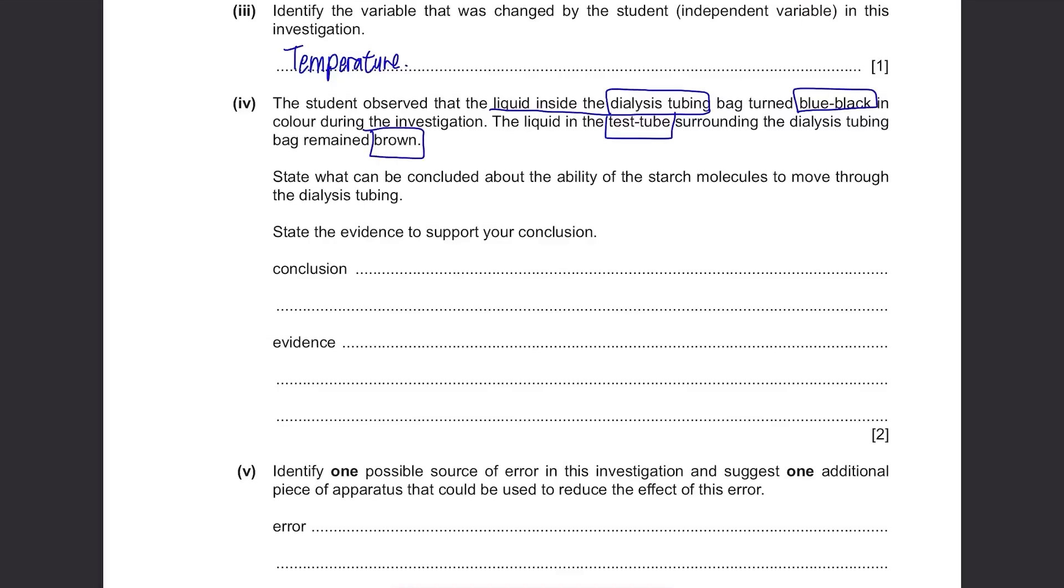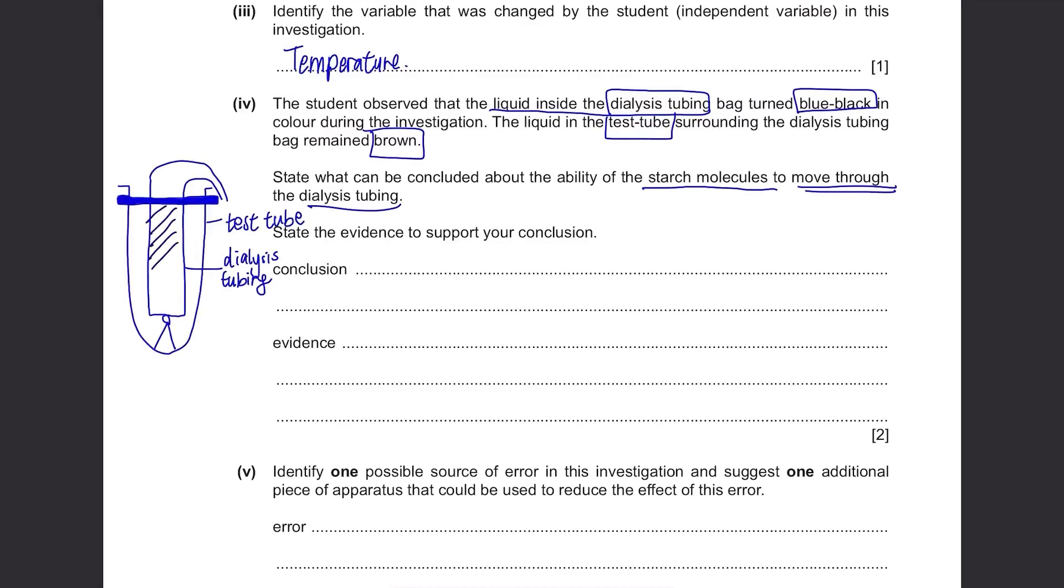Part D: The student observed that the liquid inside the dialysis tubing bag turned blue-black in colour during the investigation. The liquid in the test tube surrounding the dialysis tubing bag remained brown. State what can be concluded about the ability of the starch molecules to move through the dialysis tubing. State the evidence to support your conclusion. So inside the dialysis tubing, starch will turn blue-black as iodine has entered the tube. However, outside the dialysis tubing, it won't turn blue-black and they're asking why is that so? Well, it's because even though iodine can enter the dialysis tubing, starch cannot pass through the dialysis tubing to enter the water surrounding it. In the end, there will be only iodine solution in the water during the dialysis tubing, staying brown in colour. This is the evidence, the liquid around the bag remains brown.